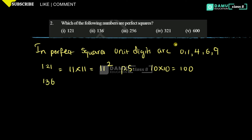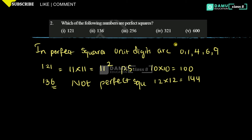Next, 136. After 11, we do 12 into 12 = 144. So after 11 squared we get 144. Even though 6 is a unit digit of 136, it is not matching. Between 11 squared and 12 squared, 136 does not appear. So 136 is not a perfect square.